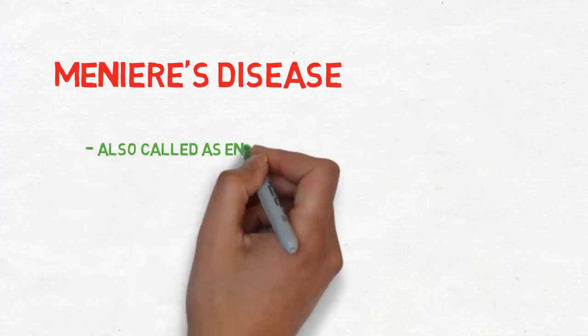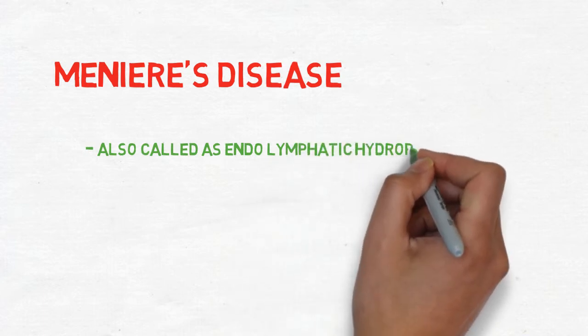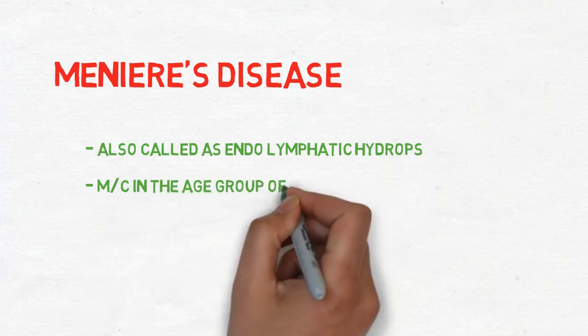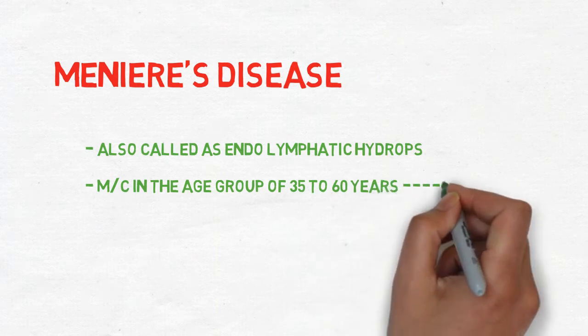In this disease there is excessive collection of endolymph in the inner ear because of some pathologies. This disease is most common in the age group of 35 to 60 years and most commonly occurs in males.